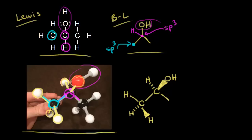Finally, let's look at the last carbon - the carbon in red. This carbon is also sp3 hybridized, so we expect tetrahedral geometry. Looking at this carbon, this bond and this bond are in the same plane, so we draw in the carbon in red with a hydrogen in the same plane.